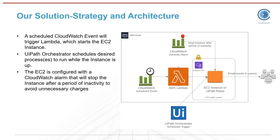Then on the other side, UiPath Orchestrator will have a schedule set up to trigger the desired process or processes to be run, aligned with the window that the EC2 instance is up and running. You can set up one process or multiple — if you want five processes run, just set up all five to run at the same time, and Orchestrator will queue those jobs to run on the EC2 instance one after the other.